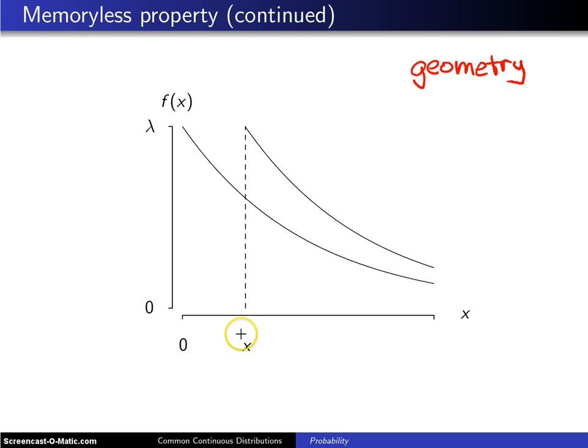Then let's choose a particular time x, which is right here, and say that the light bulb has survived to time x. Well, its remaining lifetime looks like this, but of course, the remaining part of the probability density function does not integrate to 1,